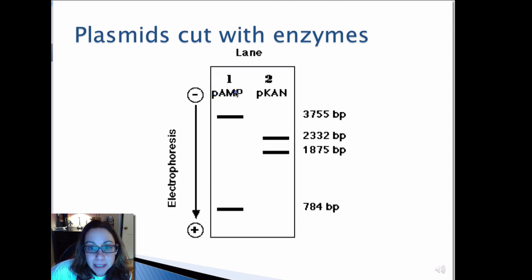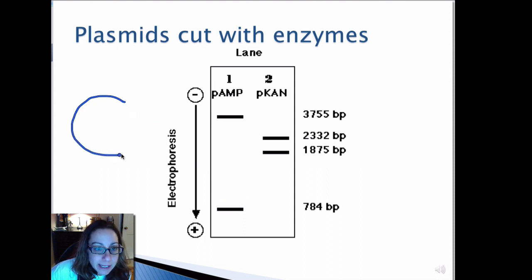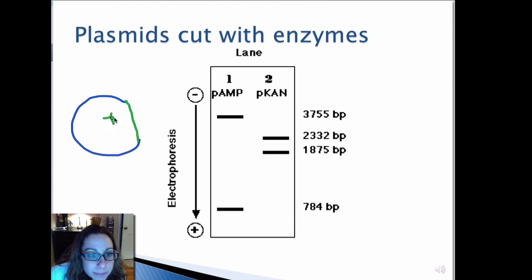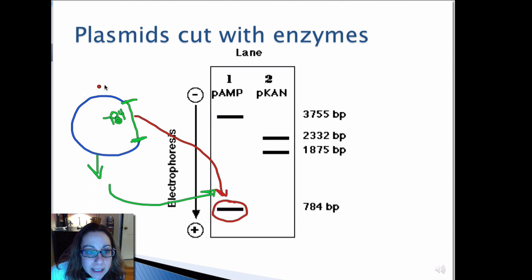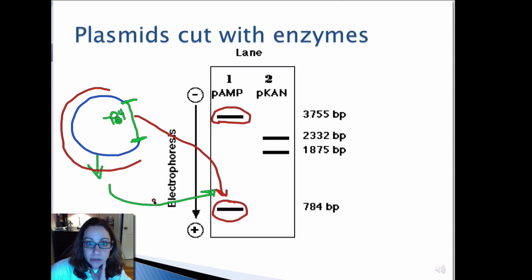When you cut the P-AMP plasmid with your two restriction enzymes, you cut out a 784 base pair band, leaving the plasmid backbone. When you run the cut plasmid on a gel, you get two bands: one corresponding to the 784 base pair fragment and a larger band corresponding to the rest of the linearized plasmid. You get the same type of result with the P-CAN plasmid, which had a much larger piece taken out.